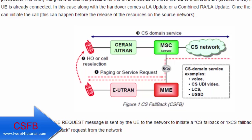So what is the Combined EPS/IMSI attach? In UMTS we had a terminology called combined registration, which means the UE simultaneously performs registration for both the CS network and PS network in parallel. In LTE, which is basically a packet-only network, the combined attach means the UE performs registration for both the LTE network and the non-LTE network — meaning WCDMA or GSM. This is needed because of CS Fallback.